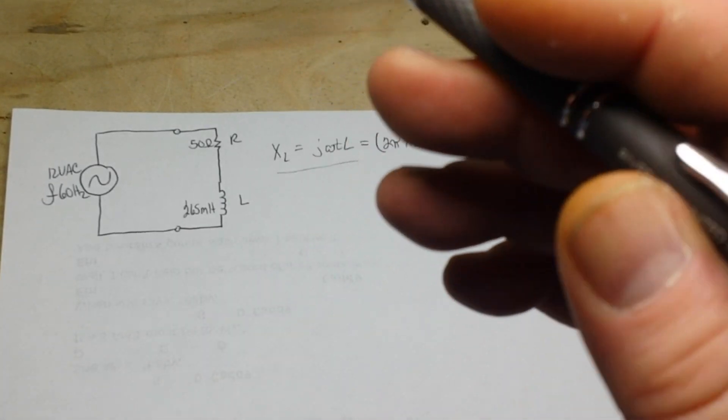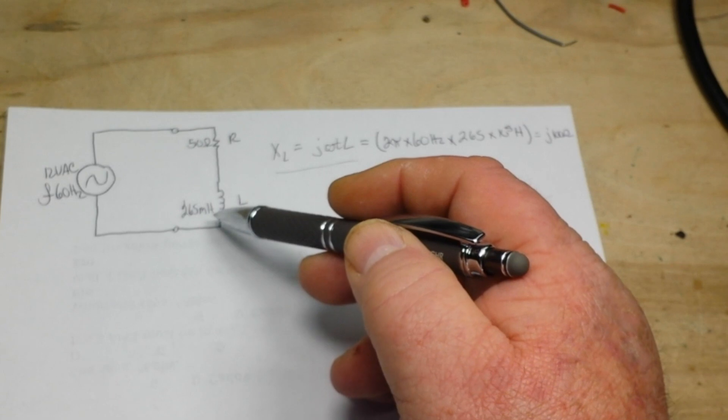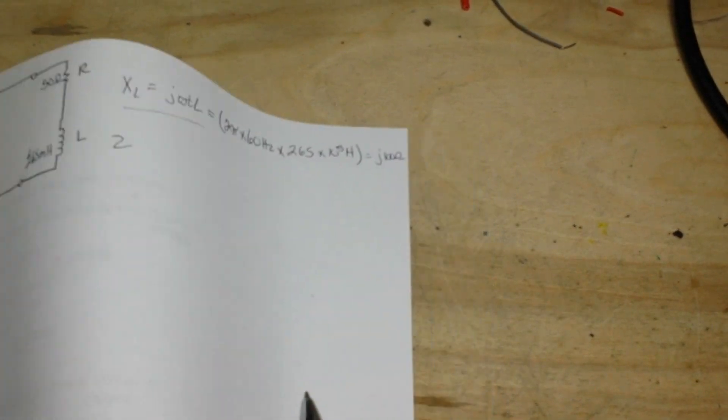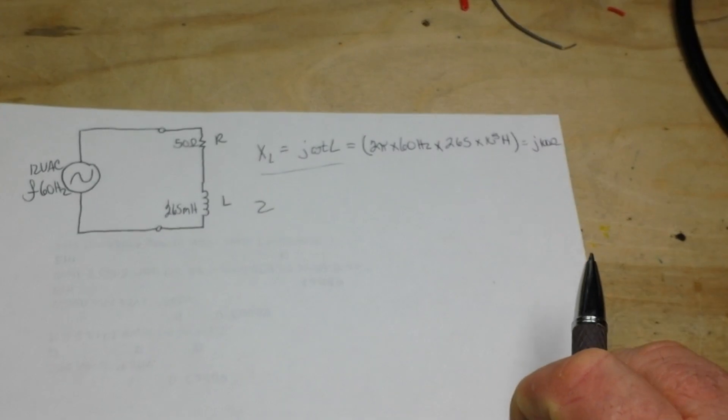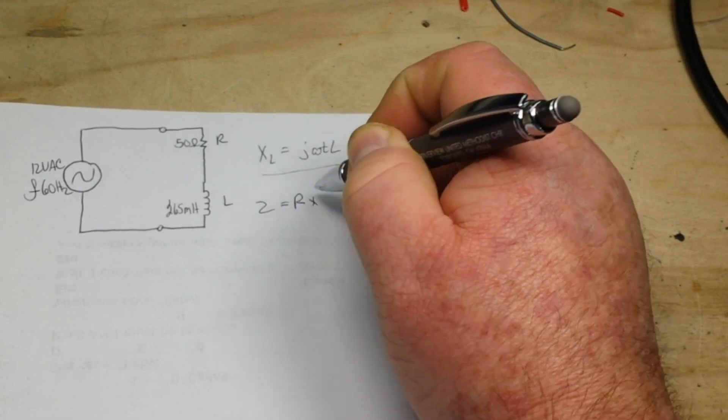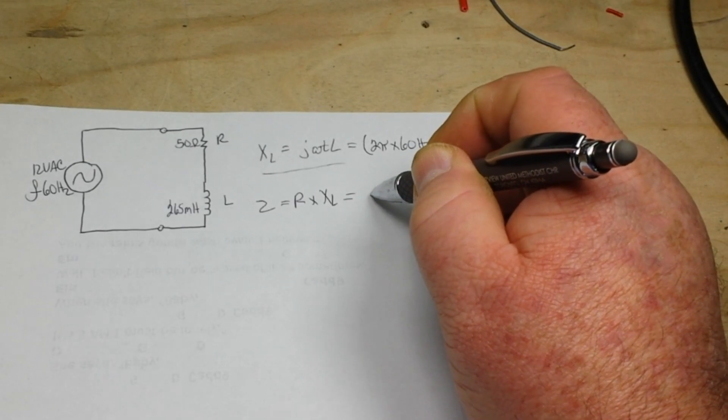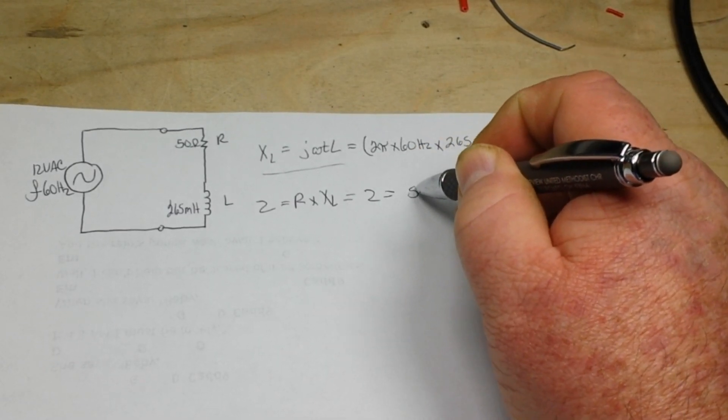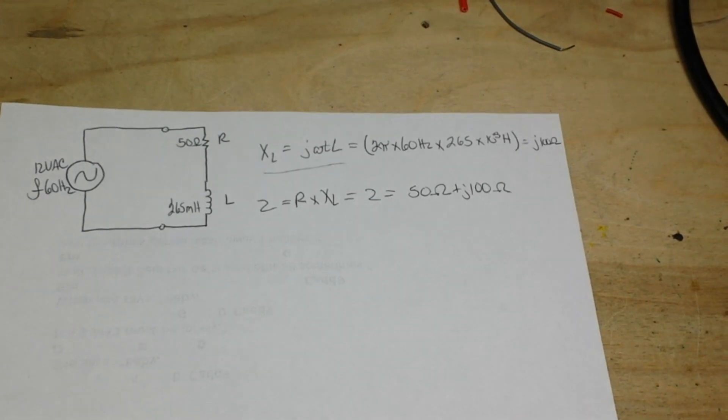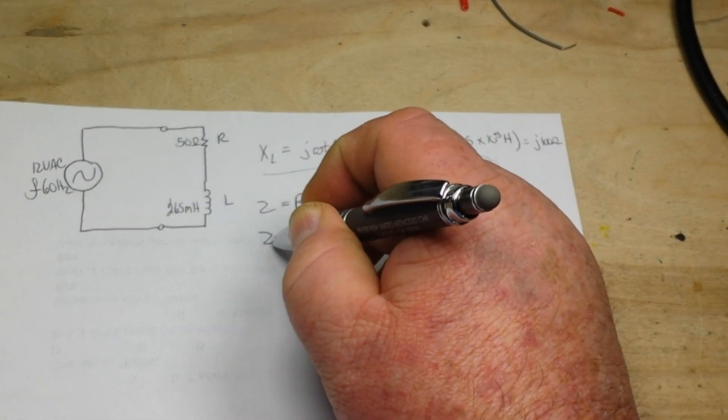Now, since our resistor and our inductor are in series, the math is really easy. We can just figure out that Z equals R plus XL, right? We just figured out XL, we already know R, so Z is equal to 50 ohms plus j100 ohms. See, it's not that hard. That's the rectangular form.